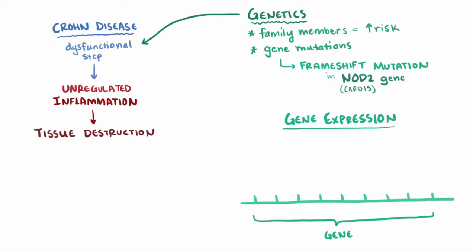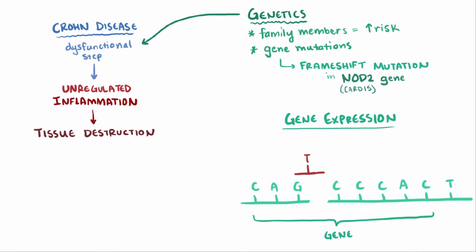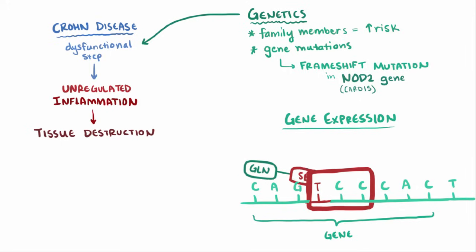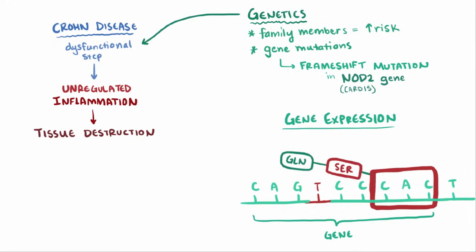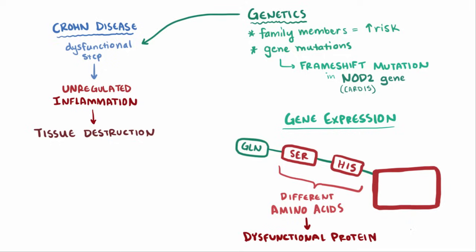Usually for gene expression, nucleotides are read in groups of three. But when you add or subtract one or two nucleotides, it essentially shifts all the remaining nucleotides, which usually ends up in totally different amino acids being coded, and probably a dysfunctional protein.